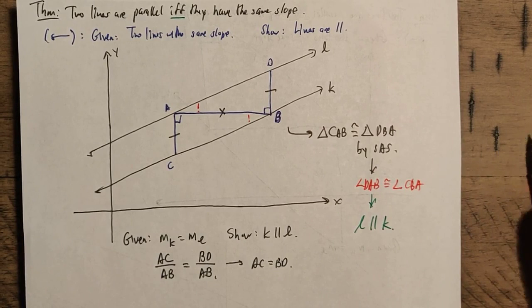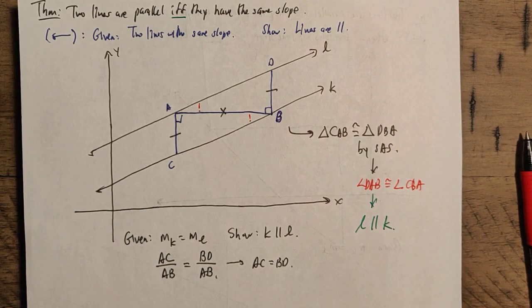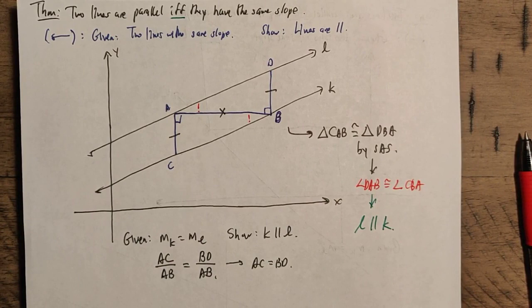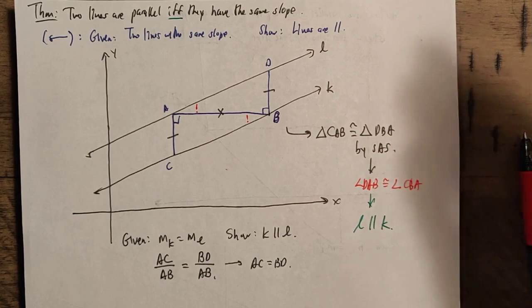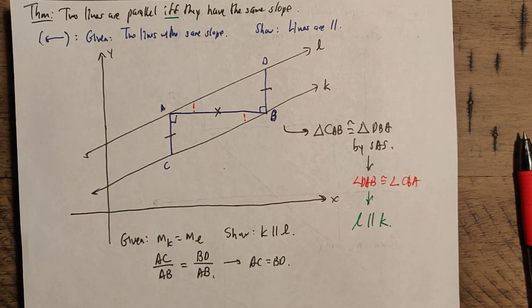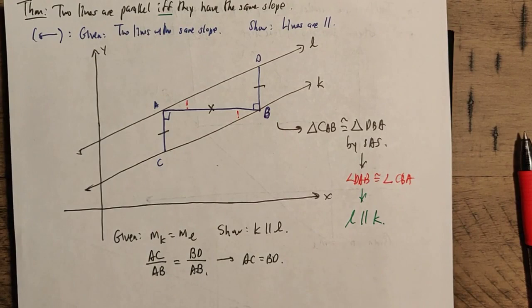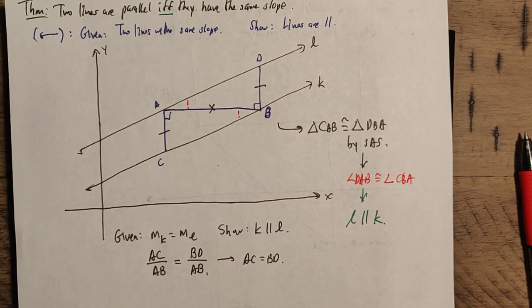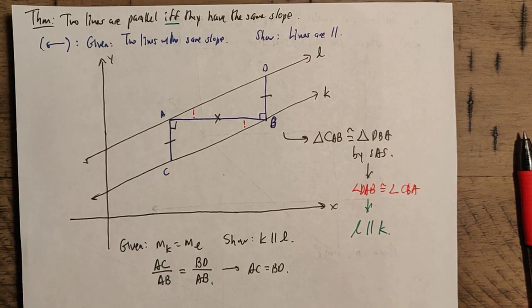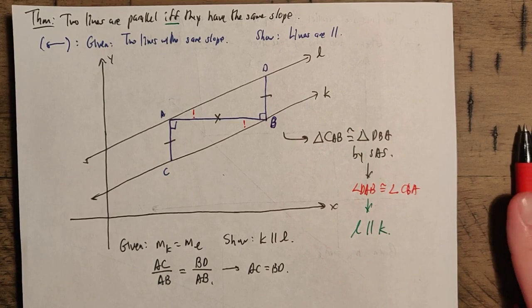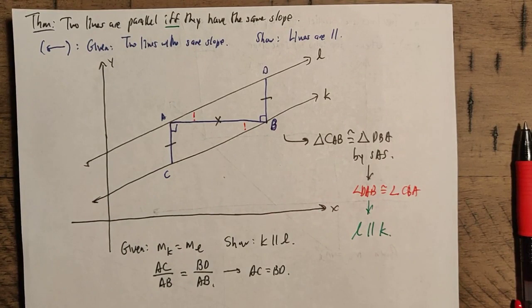This is a pretty airtight argument, but you have to be careful about corner cases — this is true for any argument in mathematics. There may be situations where you cannot do this construction. For example, if K and L are horizontal lines, there's no way to pick a horizontal line connecting a point on one to the other. But that's okay, because horizontal lines by definition have slope zero, so they already have the same slope and are already parallel. The same is true of vertical lines. As long as the lines are not horizontal or vertical, you can do this construction.